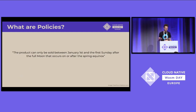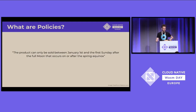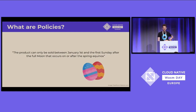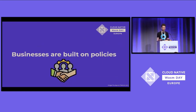Policies can also be pretty unusual — we're not just always talking about whether admins have access to certain data sets. This is an interesting policy I saw just last week: a product can only be sold between January the 1st and the first Sunday after the full moon that occurs on or after spring equinox. There's a brand of Easter eggs that uses this policy to decide whether Easter eggs should be sold in the UK between those dates. The point I'm trying to make is that businesses are built on policies, and when we talk about policies we're often talking about business logic.